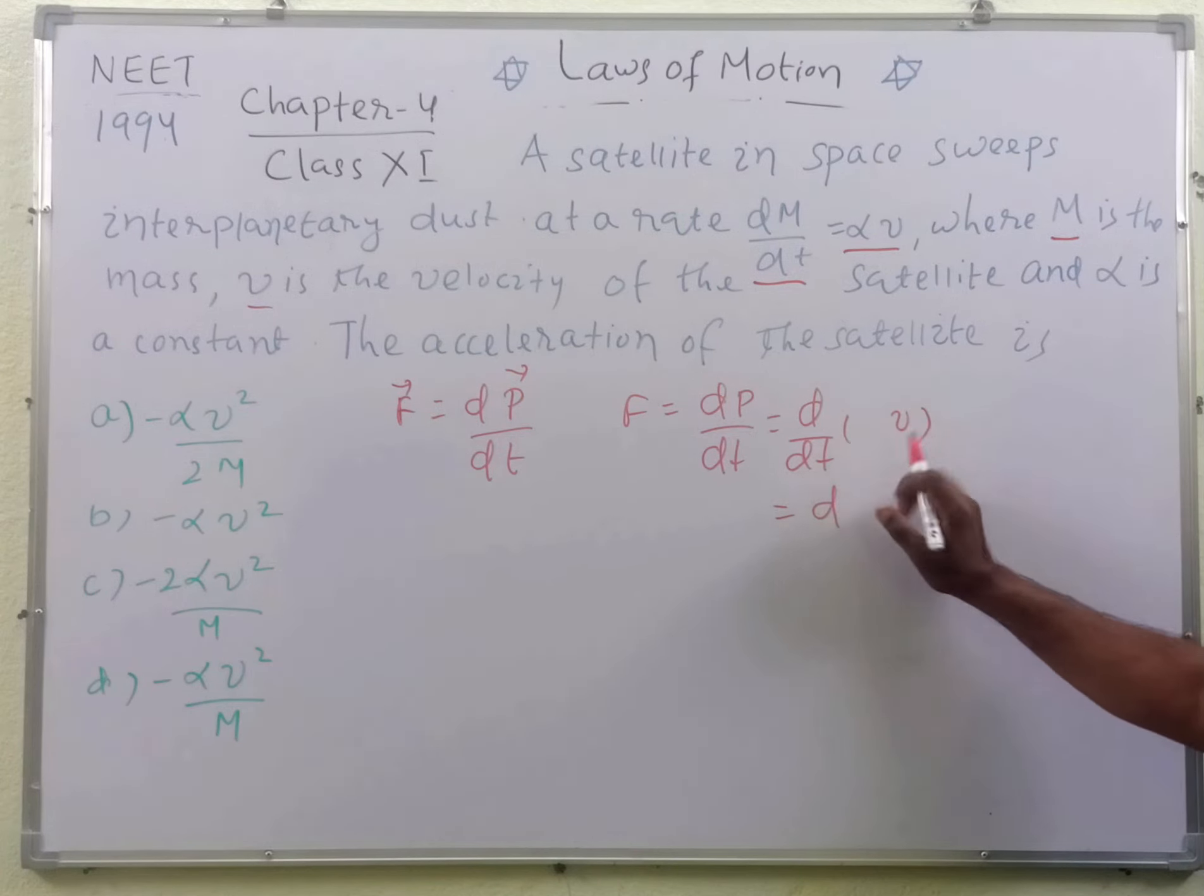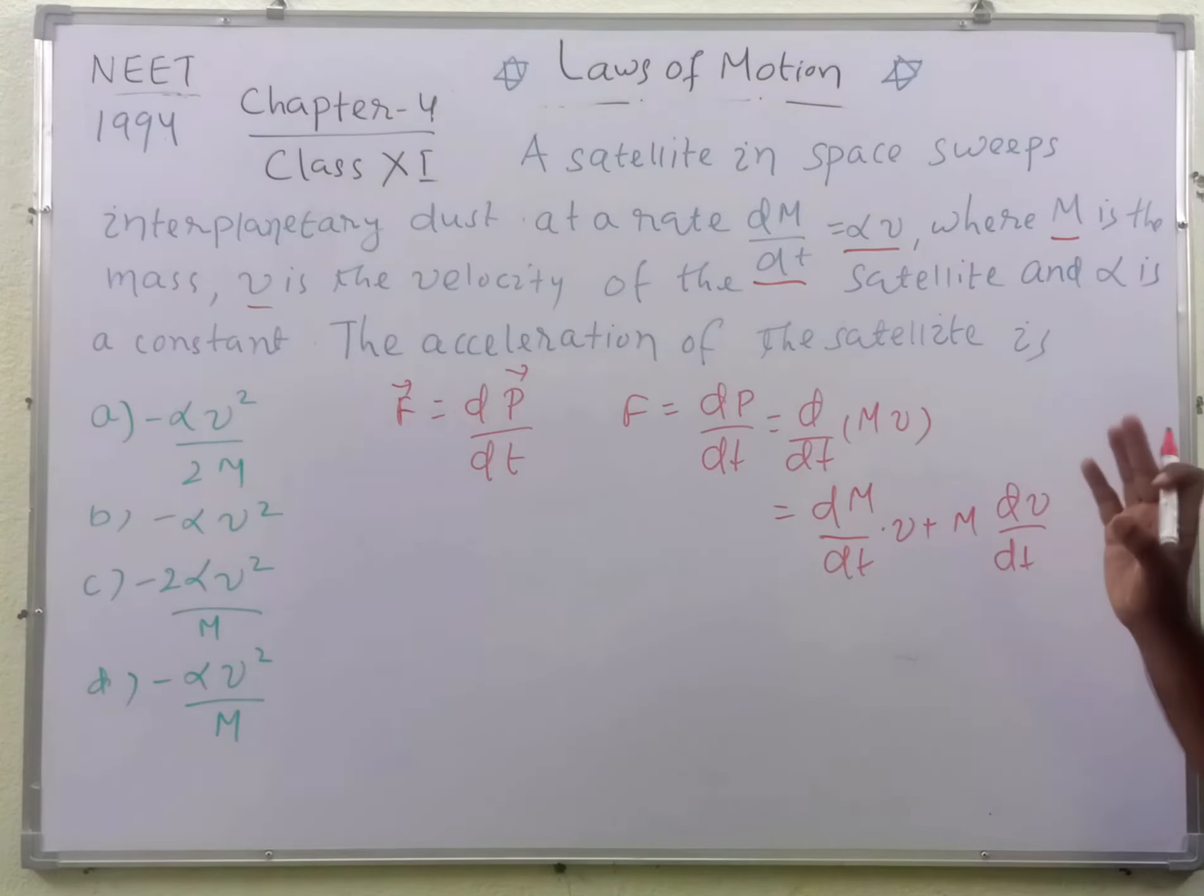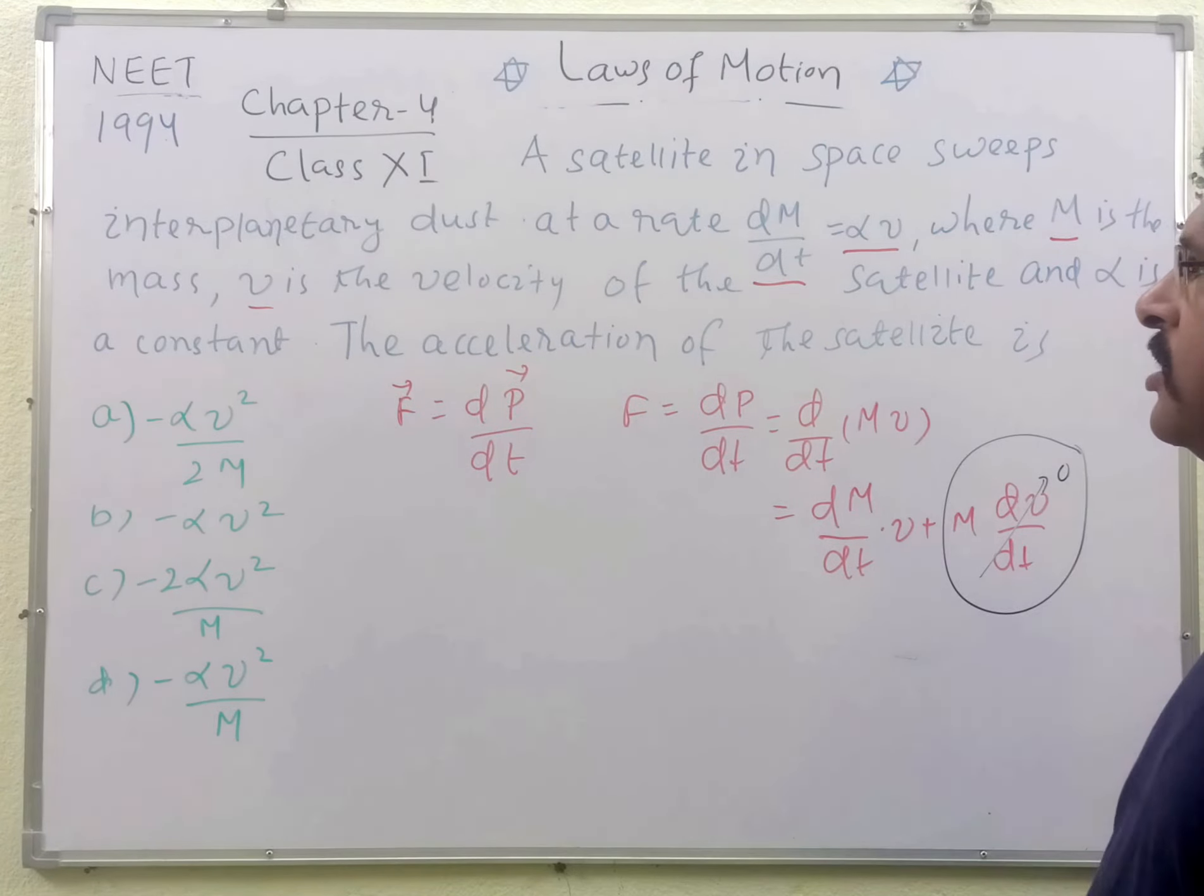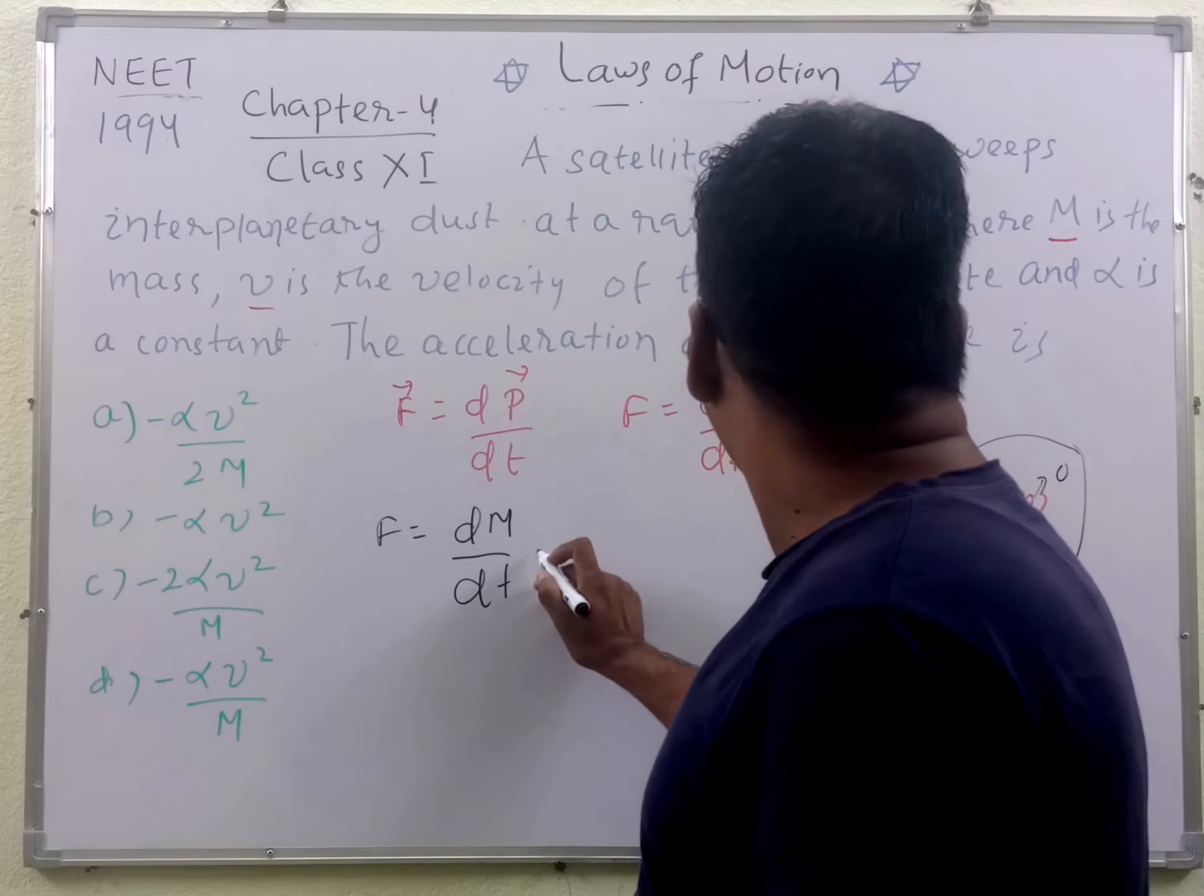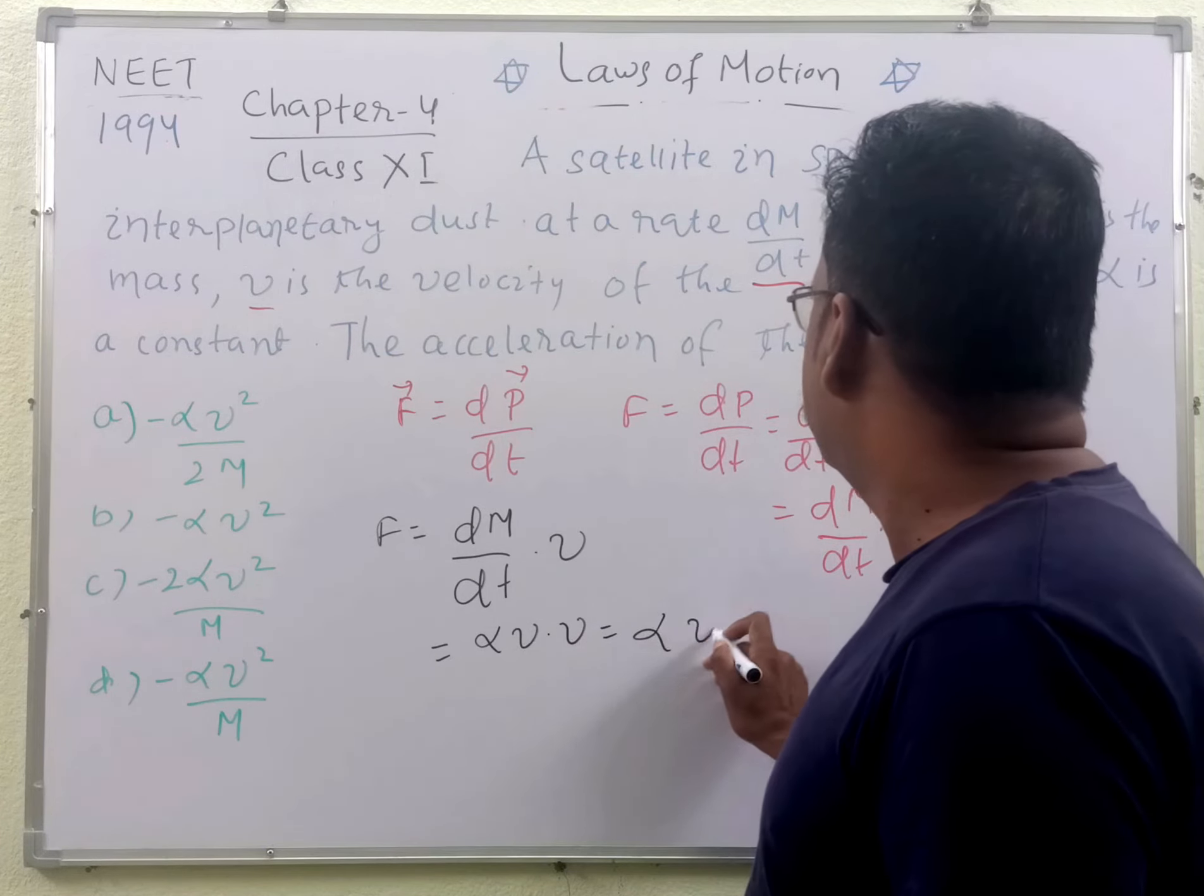So we may write F = d(Mv)/dt. Here mass is M. Since v is constant, the dv/dt term equals zero, so the second term is zero. Therefore, force on the interplanetary dust F = (dM/dt)v. Since dm/dt = αv, this gives F = αv × v = αv².